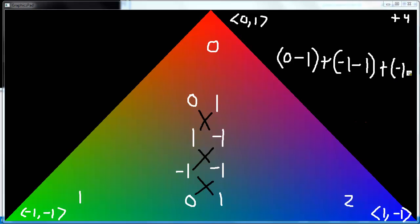Subtract 0 times negative 1 is 0. Collapse all this. We get negative 1. And this is negative 2. And this is negative 1. Let's add all that together. And we get negative 1 plus negative 2 plus negative 1 is negative 4.